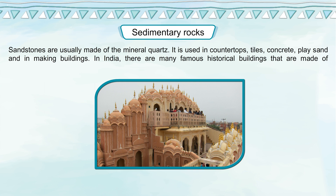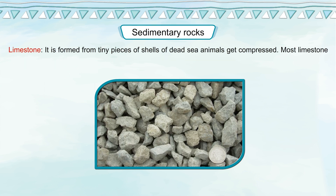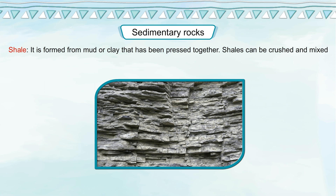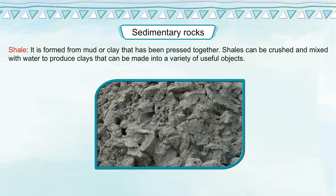In India, there are many famous historical buildings made of sandstone. Limestone is formed from tiny pieces of shells of dead sea animals that get compressed, and most limestone is crushed and used as a construction material. Conglomerate contains sand and rounded pebbles cemented together, used as construction material and also polished to make ornaments. Shale is formed from mud or clay pressed together, and can be crushed and mixed with water to produce clays for a variety of useful objects.